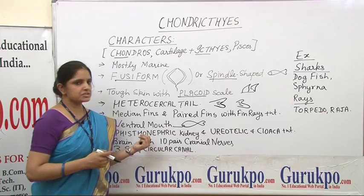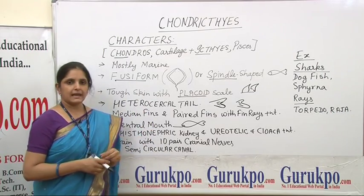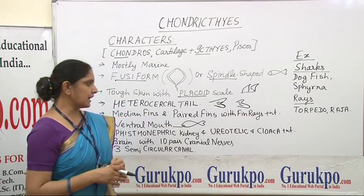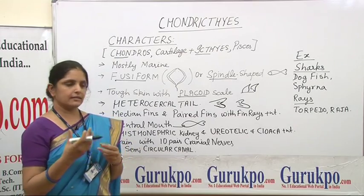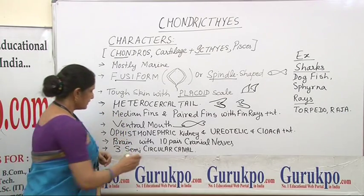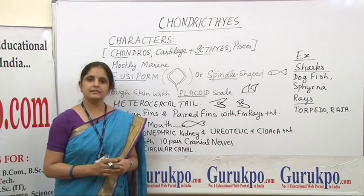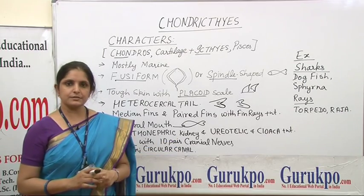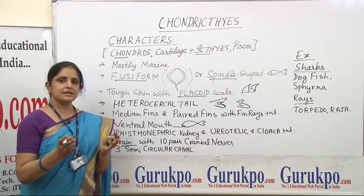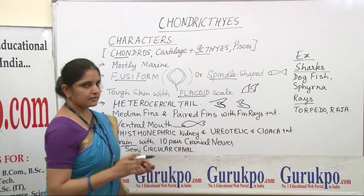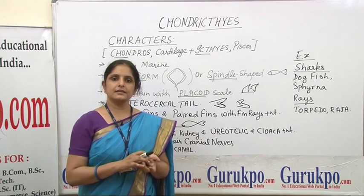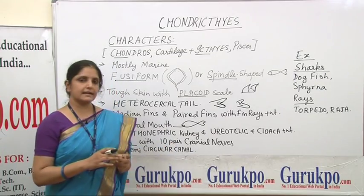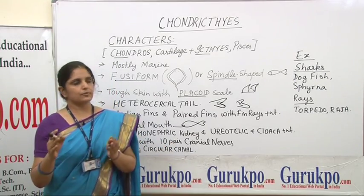Chondrichthyes are ureotelic in nature, meaning they excrete urea into the water, and a cloaca is present in the alimentary canal. The brain is present along with 10 pairs of cranial nerves. Fishes and amphibians have 10 pairs of cranial nerves that innervate the brain. There are 3 semicircular canals present in the internal ear of Chondrichthyes, though 3 semicircular canals are actually present in all vertebrates.